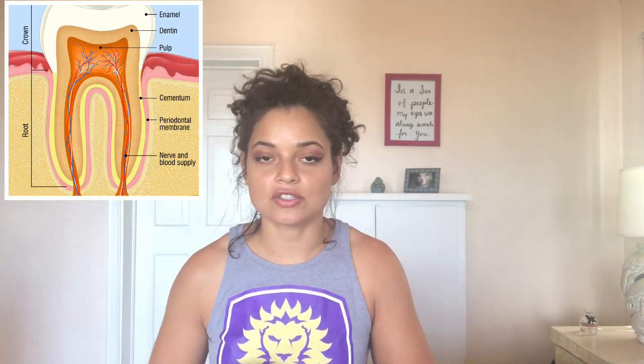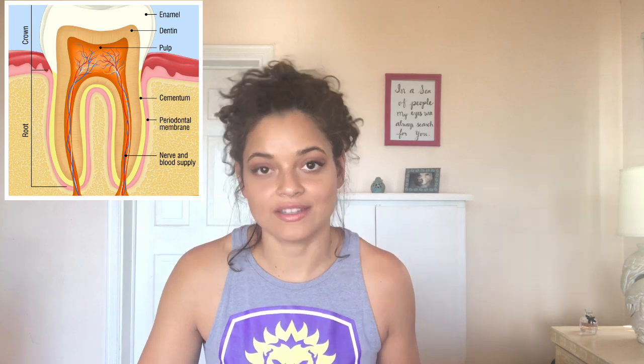So the four layers I want to talk about are the enamel, dentin, pulp, and cementum. There's also a periodontal membrane slash ligament that I'm going to go over. The enamel is the crown section of your tooth — it's the white portion, so it's what you see. This is made up mostly of calcium phosphate.